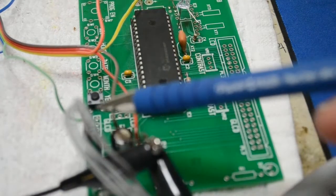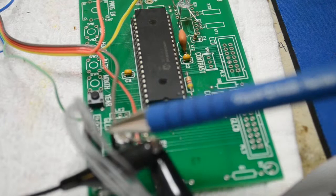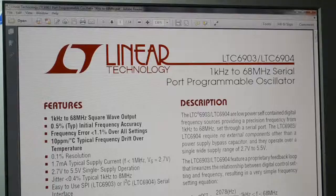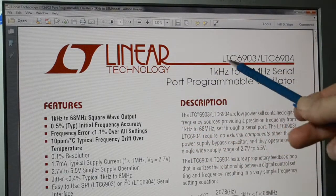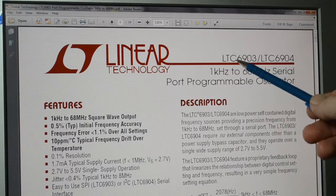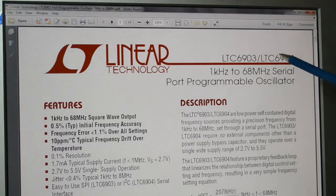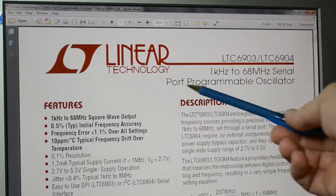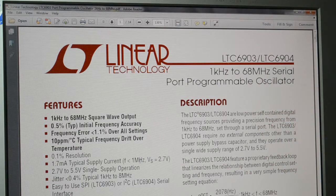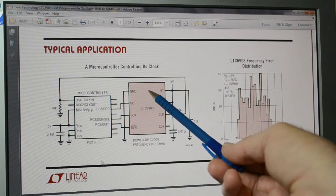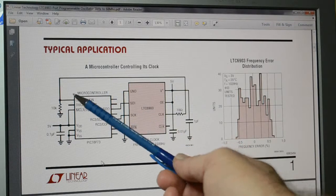I'm running the board off the serial programming port, and the serial programming port is running to microengineering labs, a PIC programmer. So we'll look at the datasheet. Linear technologies, LTC 6903, that's the one I've got today, SPI programming. The LTC 6904 is the two-wire I2C. 1 kHz to 68 MHz, serial port programmable oscillator.